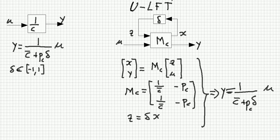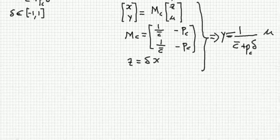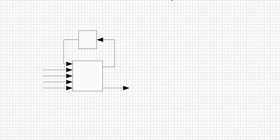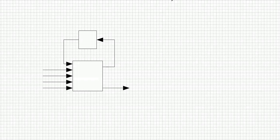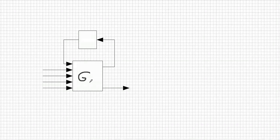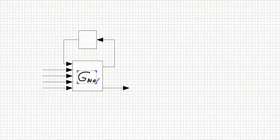Imagine now that for all the uncertain parameters, there are 29 of them, we apply the linear fractional transformations as illustrated before. Then we should come up with the upper-linear transformation that describes our structure uncertainty problem. Let's see. We have the nominal plant G nominal, and the inputs for this plant.